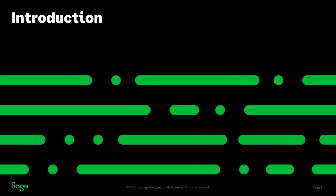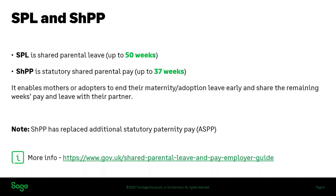On to the introduction — we'll start by explaining what shared parental leave and pay actually is. SPL, or shared parental leave, is an entitlement of up to 50 weeks that can be taken when a mother or an adopter decides to end their maternity or adoption leave early and therefore have a remaining entitlement to share with their partner. SHPP is statutory shared parental pay, and this is what we're going to focus on in the webinar because this is what you'd process through your payroll.